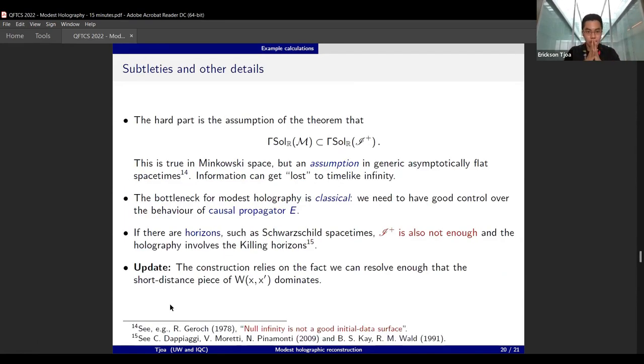Really, in this presentation, the hard part is to justify when the first assumption holds: that the entire bulk solution gets projected into the boundary. This is true in Minkowski spacetime, but it is an assumption in generic asymptotically flat spacetimes. This is basically due to the famous result by Geroch in 1978 that null infinity is not a good enough initial data surface for every single asymptotically flat spacetime you can think of.